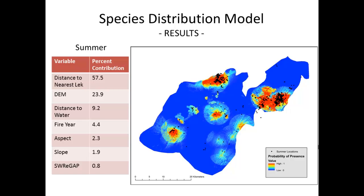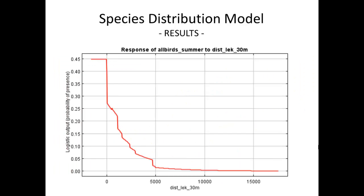The top predictor in this model is distance to nearest lek, and we can break it down and examine the effect. This is a good tool for management — for example, looking at the core area strategy. The x-axis is distance to lek in meters and the y-axis is the probability of presence. There's a really distinct cutoff at 5 kilometers, where the probability of presence farther than 5 kilometers is really unlikely.